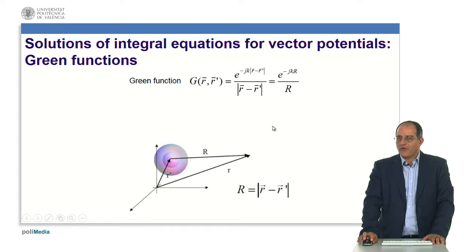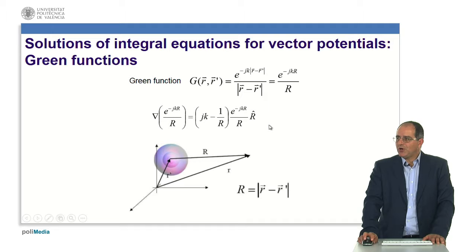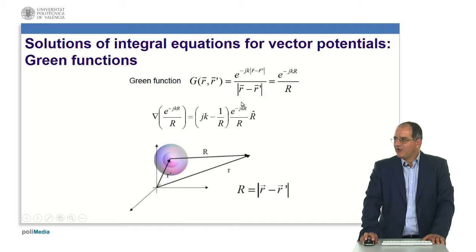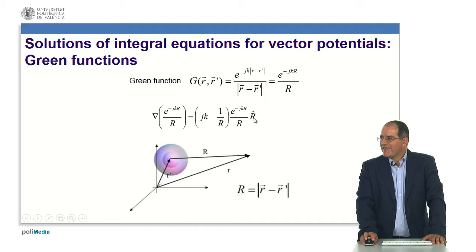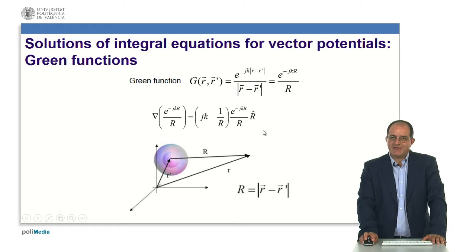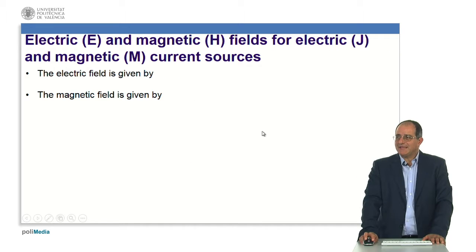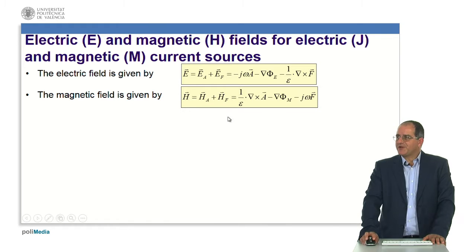When I have to go from the vector potential solution and scalar potential solution to the real electric and magnetic fields, I will have to take the derivatives of this Green's function. The derivative of this Green's function is given by jk over r — where k is the wave number 2pi over lambda — minus 1 over r squared, times the corresponding spherical function in the radial direction. The next step is to introduce this derivative into the corresponding electric and magnetic field expressions.